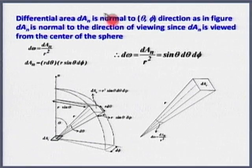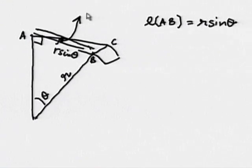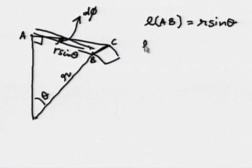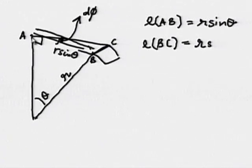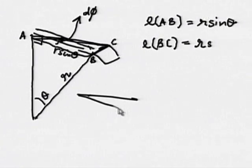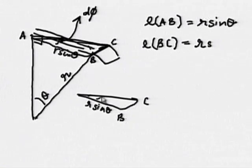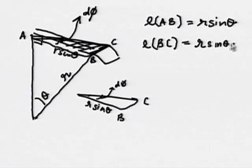So this angle is dφ — this is dφ, the central angle. So what is this arc length bc? Arc length bc: when dφ is small, arc length equals radius times angle. So I write this as r·sinθ, which is the radius of this circle for which bc is a part. bc is a part of this circle whose radius is r·sinθ and the central angle is dφ. So I have come from three dimensions to the two-dimensional figure. So r·sinθ·dφ — this is one length, and this length is also the same.